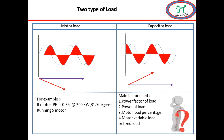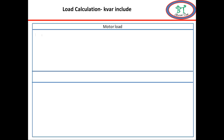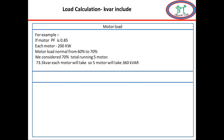Then what will be the total VAR produced in the system? We can calculate approximately. Let us consider if all 5 motors run at 60 to 70% load and the power factor of the motor is 0.85. Each motor will produce 73.5 kVAR, so approximately 360 kVAR will be produced in the system. Let us see in detail how to calculate this 73.5 kVAR.